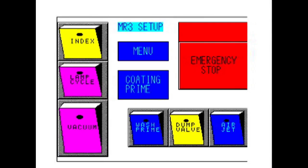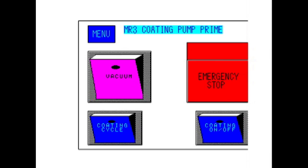Go to Machine Setup and Coat Prime menu. Turn vacuum on and place a lens on the suction cup above coating bowl.